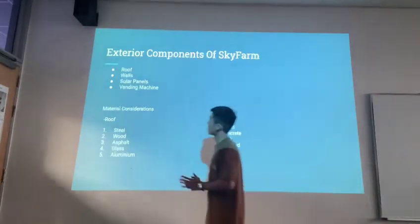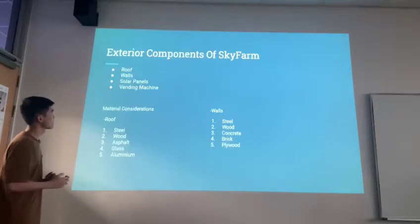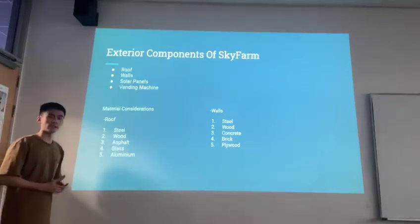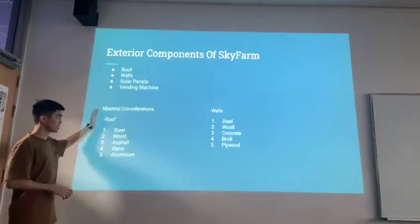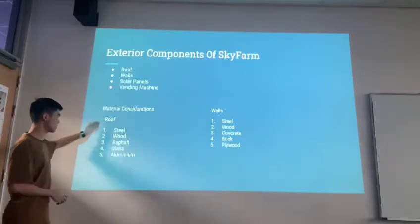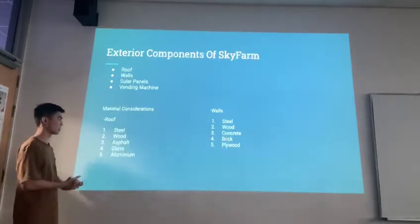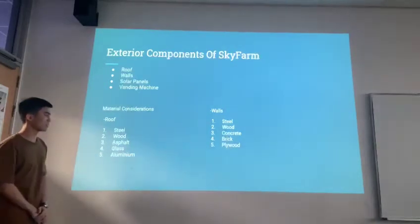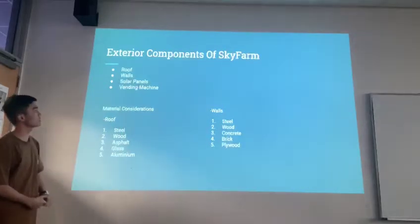Thank you, Johnson, for your time. Right now, I'll be talking about the exterior components of the Sky Farm. On the exterior side of the Sky Farm, there are roofs, walls, solar panels, and the vending machine. These are some of the materials we considered using for the roof and the walls — for the roof we have steel, wood, asphalt, glass, and aluminium, and for the walls it's all stated here. Next slide, please.